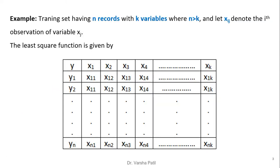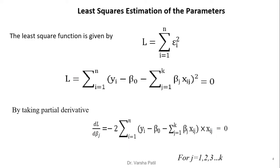The training set has n records with k variables, where n is greater than k. Let xij denote the ith observation of variable xj. This is the training data from 1 to n records. As k independent variables are present, all values of k are given, so the data is represented in matrix form. We want to find the parameters from beta 0 to beta k using least square estimation.